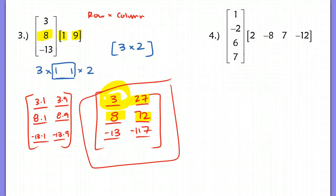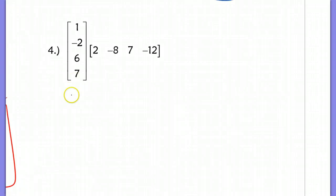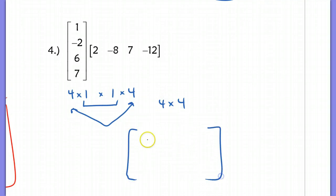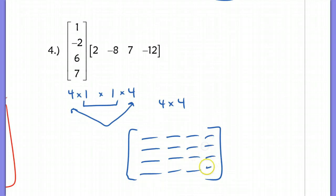The last problem is a 4 by 1 multiplied by a 1 by 4. We can multiply these because the inside numbers are the same, and our resulting matrix is going to be a 4 by 4. Go ahead and make your slots: 4 rows and 4 columns. Please go ahead and try that one and check with the key to make sure you have the process down. You're going to multiply this row by this column first, then take that same row and multiply it by the next column, and so on to fill up all the rows.